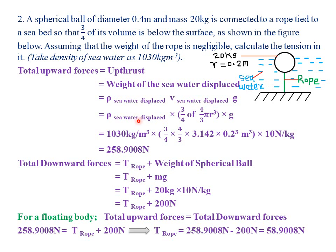So: density of seawater is 1,030 kg/m³, times (3/4) times (4/3) times π (3.142) times r³ (0.2)³, times gravity (10 N/kg). Computing 1,030 × (3/4) × (4/3) × 3.142 × (0.2)³ × 10 gives the upthrust — equal to the weight of the seawater displaced — as 258.9008 Newtons.